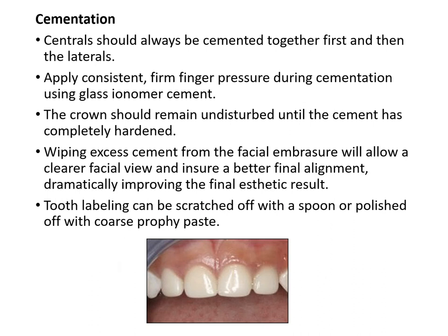For cementation, always cement the central incisors together first, then the laterals. Apply consistent finger pressure during cementation using glass ionomer cement, keeping the crown undisturbed until cement is completely hardened. Wipe excess cement from facial embrasures for a clearer view and better final alignment — ensure the crown is seated in the correct direction. Tooth labeling can be scratched or polished off with a coarse prophy paste. The final result is very aesthetic, and lacerated gingiva from sub-gingival preparation heals within approximately two weeks post-operatively.